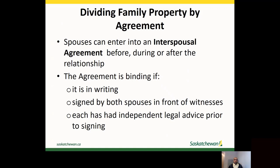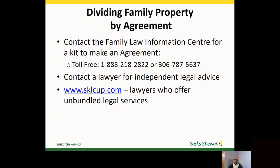The agreement can set out who will continue to live in the family home, as well as dividing the family property. The agreement is binding if it is in writing, signed by both spouses in front of witnesses, and each spouse has had independent legal advice prior to signing it. An agreement that doesn't meet these requirements can still be considered by a court, but the court doesn't have to follow the terms of the agreement. Spouses who agree on how to divide their property can contact the Family Law Information Centre at 1-888-218-2822, extension 2, for a self-help kit to create a written agreement.